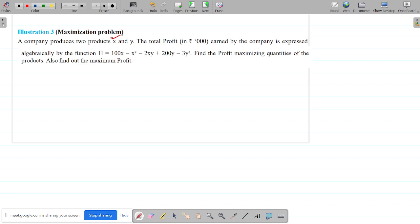A company produces 2 products X and Y. It is not a single independent variable problem. It is going to happen as a multiple problem. So it will be applied the partial differentiation concept here. The total profit in rupees thousands earned by the company is expressed by the algebraic function. This is the profit function. Find the profit maximization quantities of the products and also find out the maximum profit.